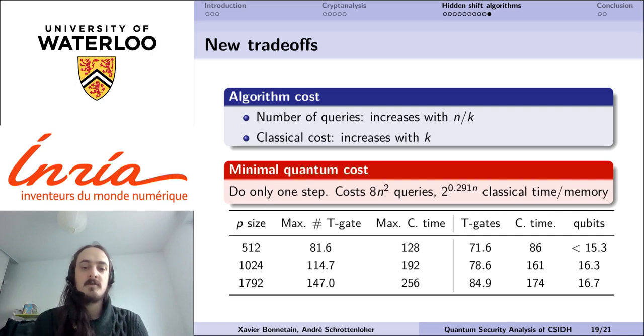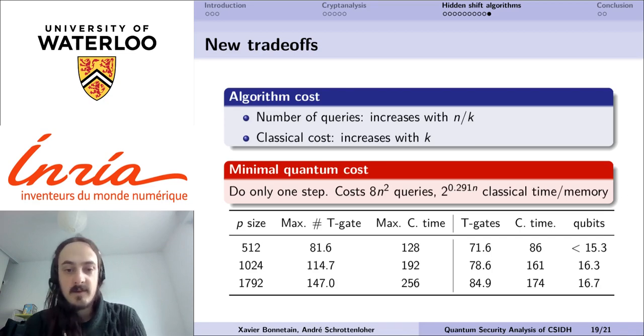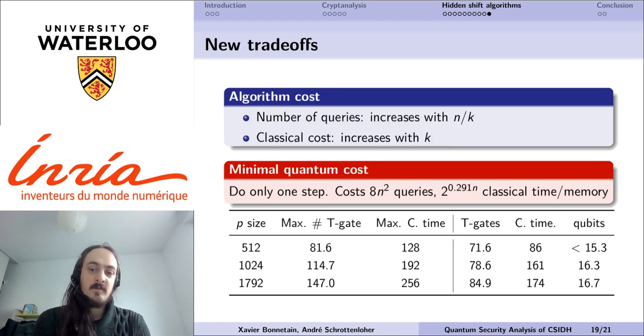Of course, there are also some other trade-offs, and if you allow a larger quantum cost, then the classical cost will quickly decrease. This allows for many trade-offs with this quantum algorithm.